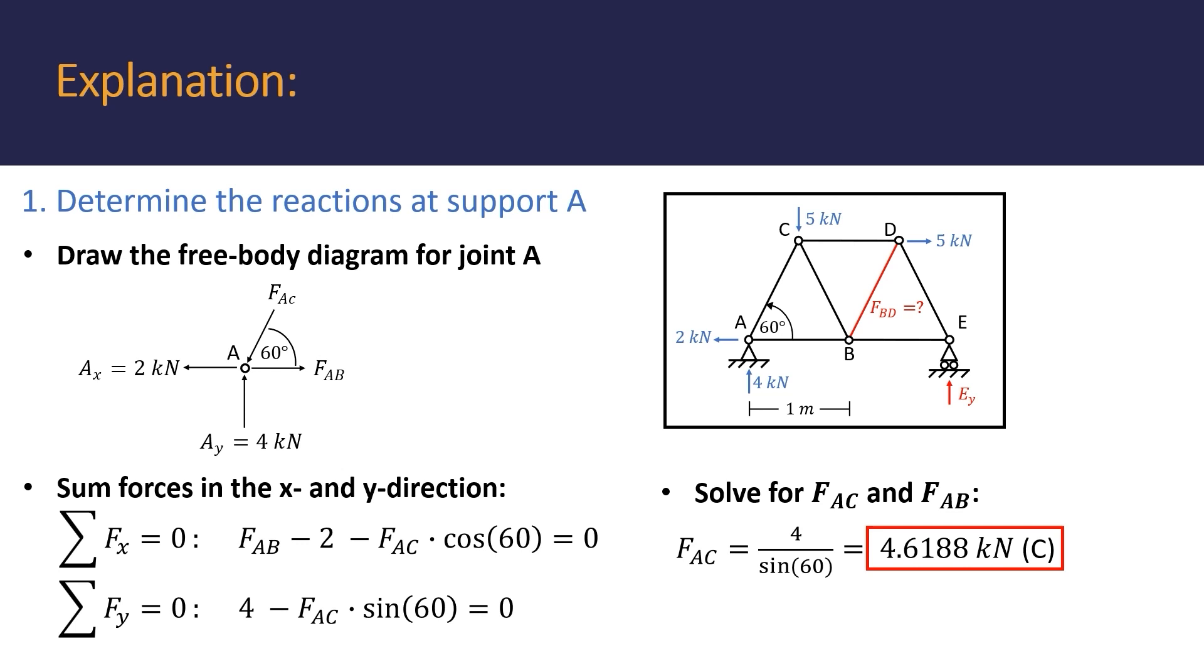Solving for force AC now enables us to solve for force AB using the first equation we derived. Member AB is found to experience a force of 4.3094 kN in tension. From this example, it can be noted that while using the method of joints, we can only start at a joint that has a maximum of two unknown member forces, since we only have two equations to solve for those initial unknowns.